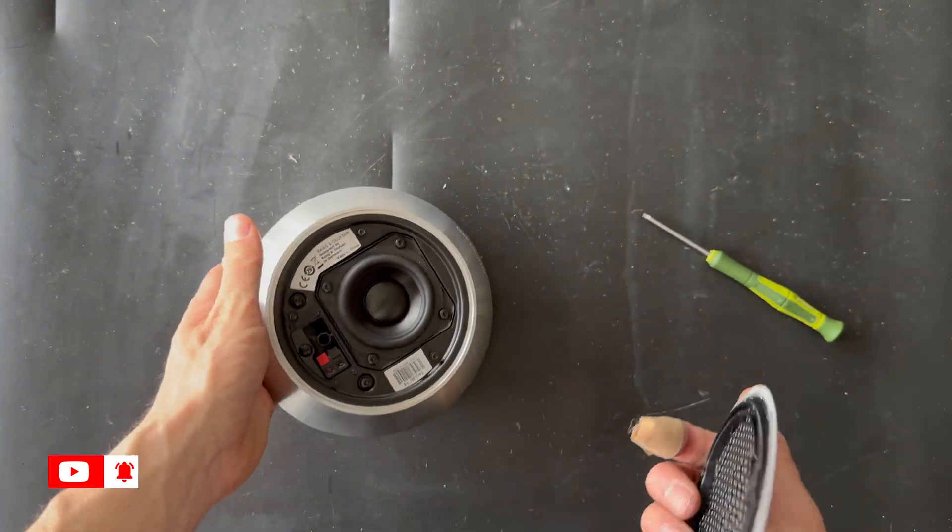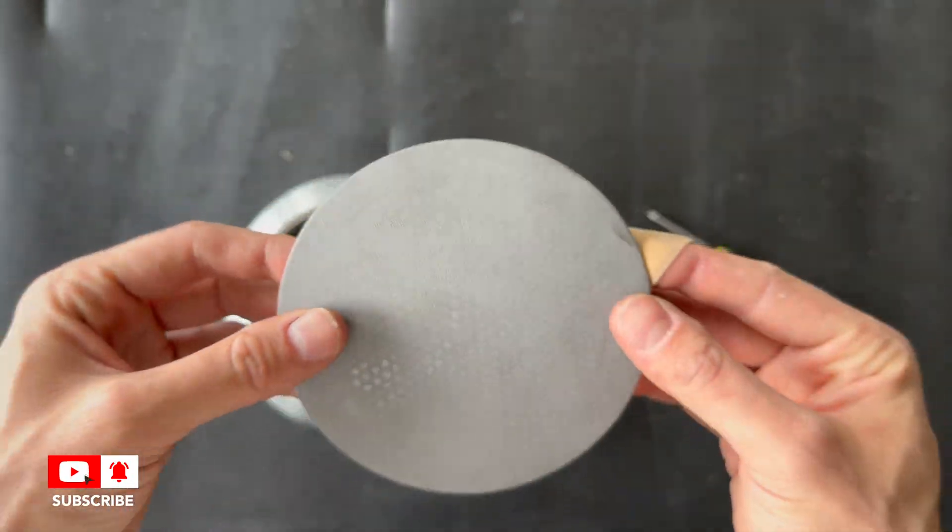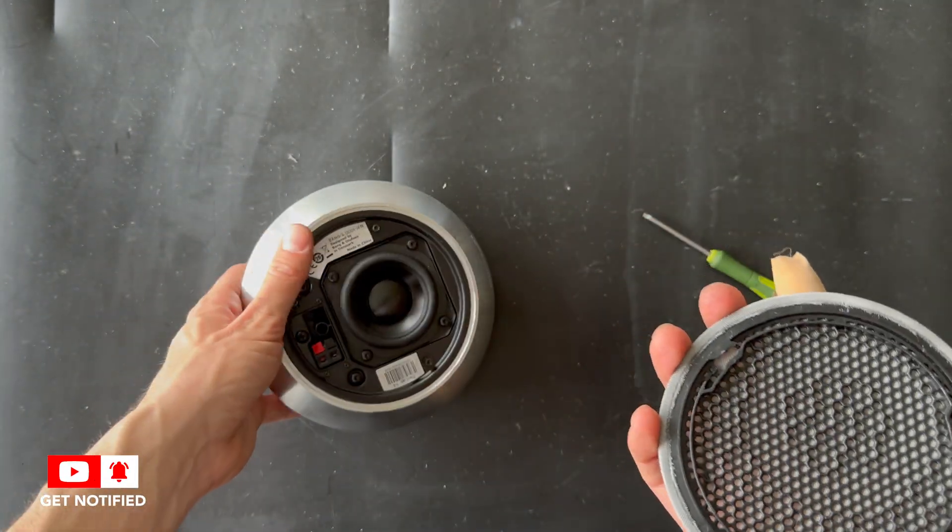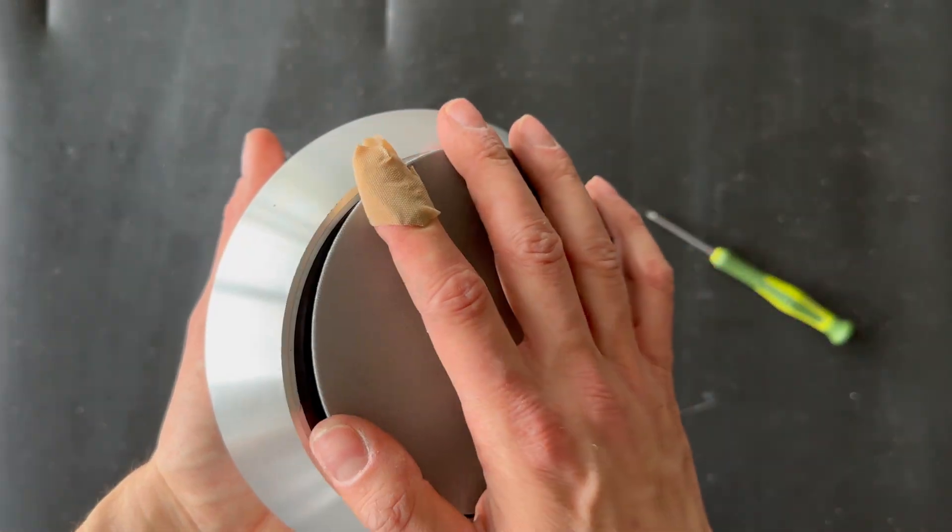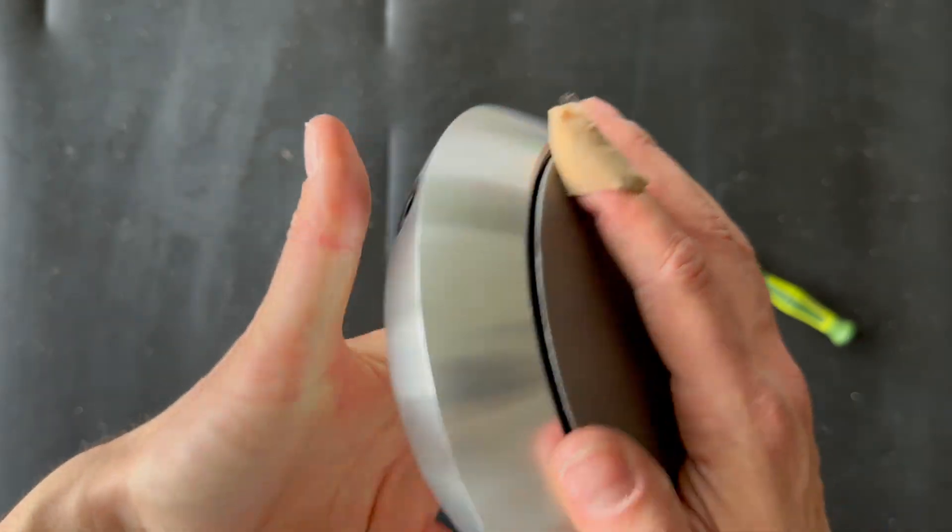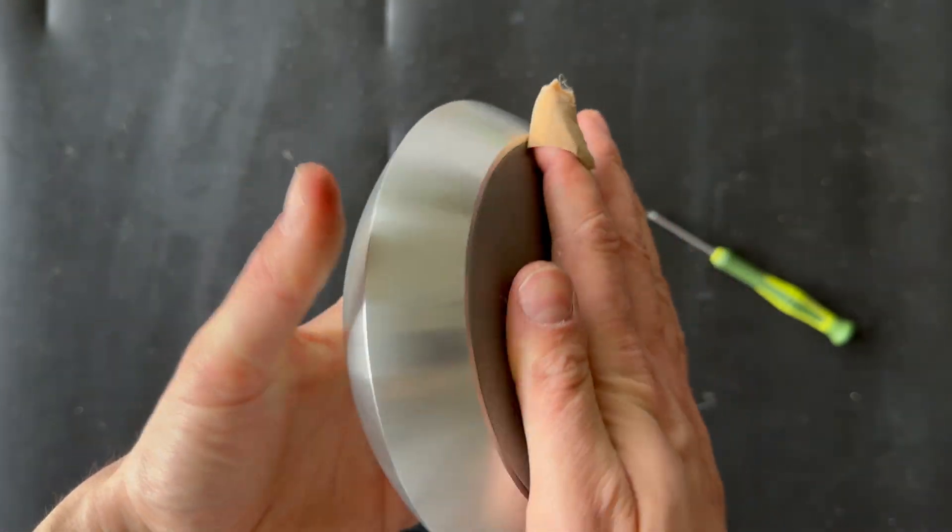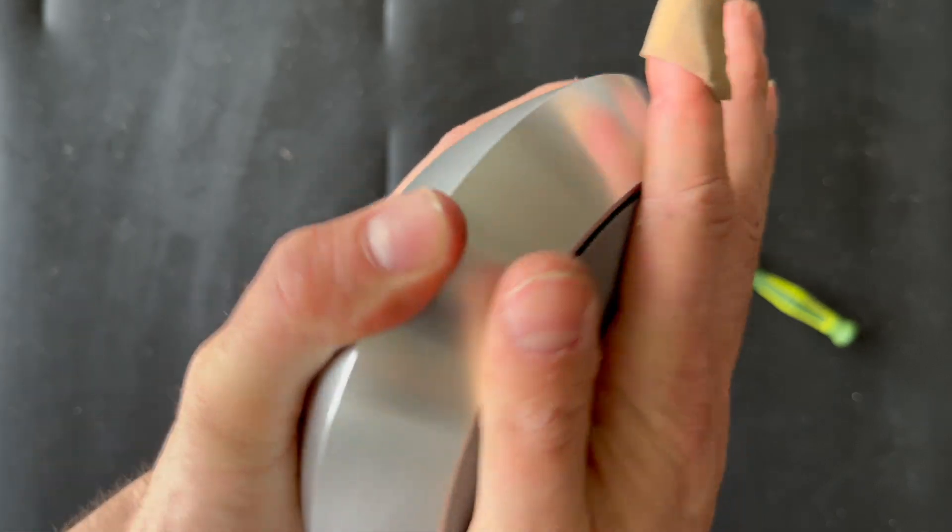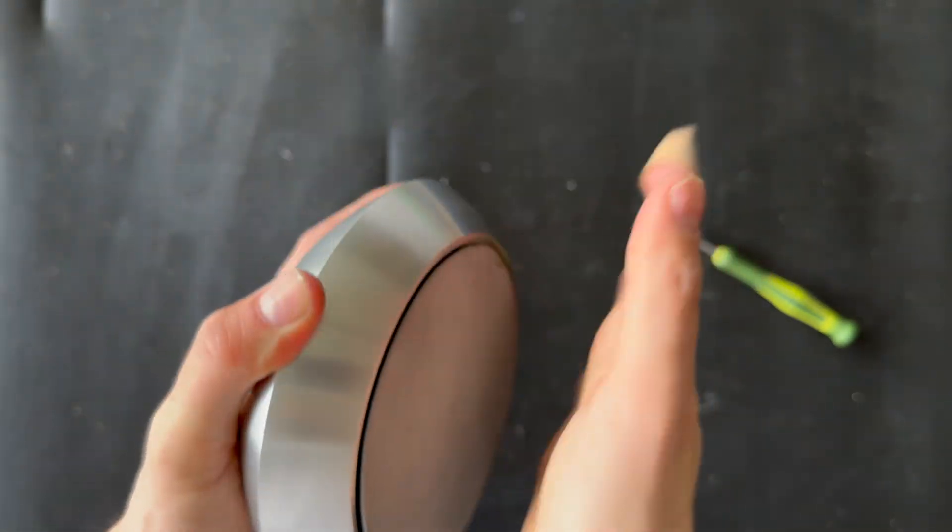Okay, if you want to change the front cover for the Beolab 14, it's very easy. You just need to twist it. Let's try. You just need to turn and